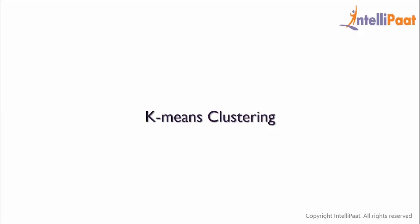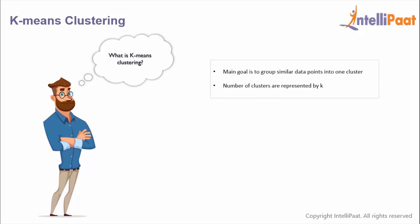Now that we know what is clustering and its different types, let us move on to k-means clustering, the main topic of our discussion today. K-means clustering is an algorithm whose main goal is to group similar data points into a cluster, and the number of groups or clusters are represented by k. K-means clustering runs on distance calculations which uses Euclidean distance to calculate distance, and the formula for Euclidean distance is as shown on the screen.